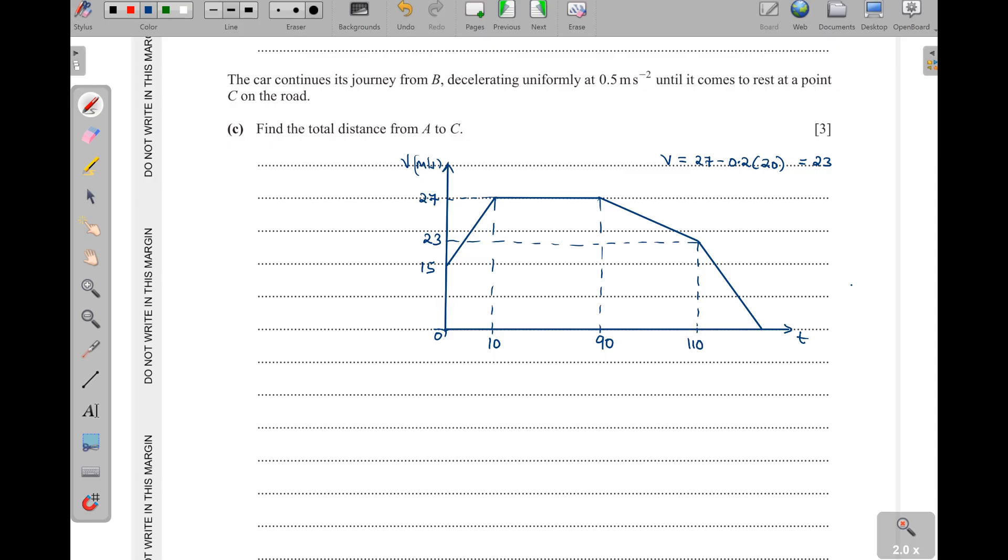Then after that, it is coming to rest. So we need to know the time here. Since we know that V is equal to U plus AT, the final is zero. We need to know the time that is taken. So T is equal to V minus U over A. So the final is zero. The initial is this one here, so I'm looking at this last decelerating part. That is 23. Then we divide by the acceleration which is given as 0.5. And this is deceleration, so it is negative acceleration. I will put a negative here. And this one will give us a positive 46. So when I add 46 here, then that means this one will be 156.